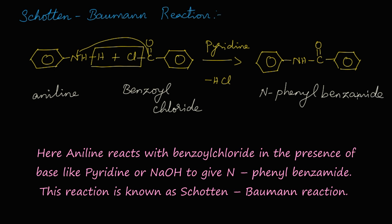Now let's summarize the reaction. When aniline reacts with benzoyl chloride in the presence of pyridine, HCl is removed and we get N-phenyl benzamide as the product. This reaction is known as Schotten-Baumann reaction. Here, the benzoylation of aniline takes place. Thank you.